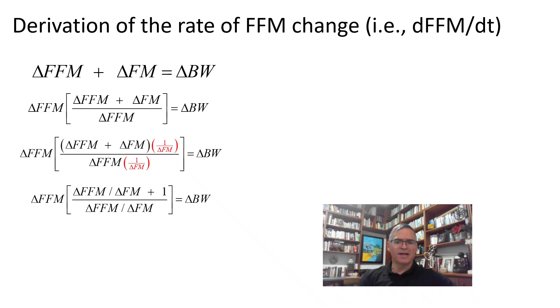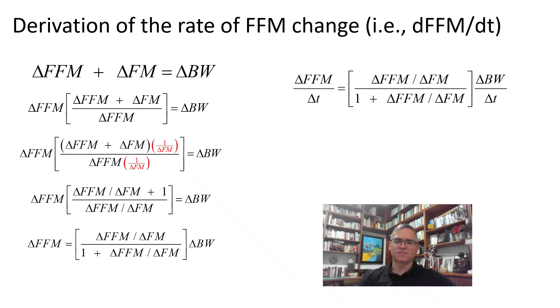Multiplying the expression by the reciprocal of the fraction within the square brackets yields. Dividing both sides of the equation by the change in time gives. Finally, as delta t approaches zero, we obtain the desired result.